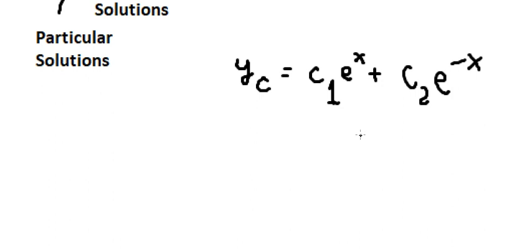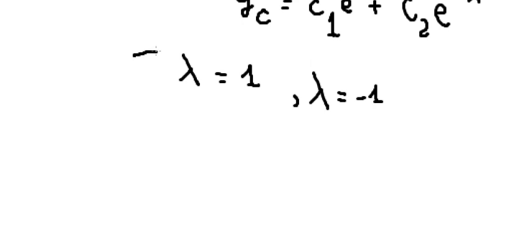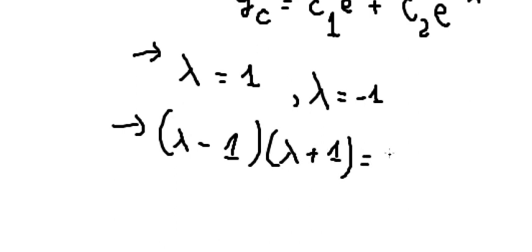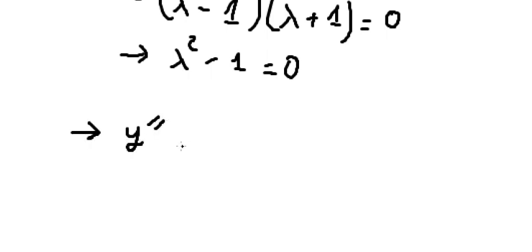For the complementary solution, we consider that lambda equals positive one — that is from here — and lambda equals negative one. So we have two solutions. Putting them together: negative one, lambda plus one equals zero, so we have lambda squared minus one equals zero. That means we have the second derivative of y minus y equals zero.